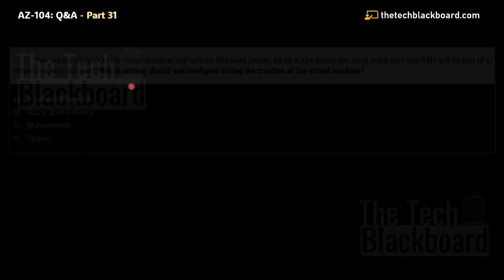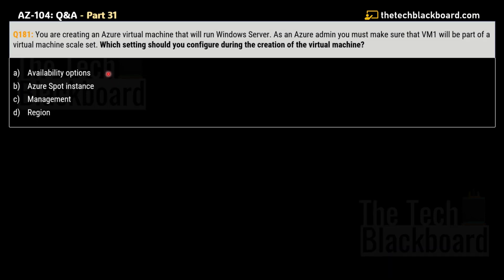Question number 181, part 31. The question says: you are creating an Azure virtual machine that will run Windows Server. As an Azure administrator, you must make sure that VM1 will be part of a Virtual Machine Scale Set — a very important concept. Which setting should you configure during the creation of the virtual machine? Options are: A) Availability options, B) Azure Spot Instances, C) Management, D) Region.